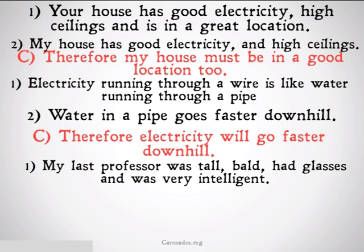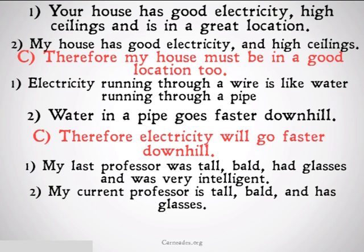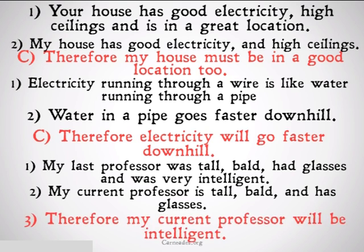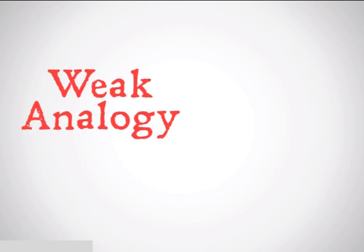My last professor was tall, bald, had glasses, and was very intelligent. My current professor is tall, bald, and has glasses. Therefore, my current professor will be intelligent. Unless my last professor and my current professor are referring to the same person, this also commits the fallacy of weak analogy, because being tall, bald, and having glasses, contrary to popular belief, does not make you intelligent. That was the fallacy of weak analogy.